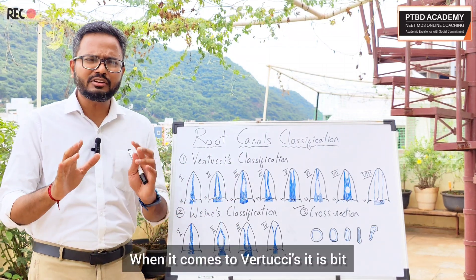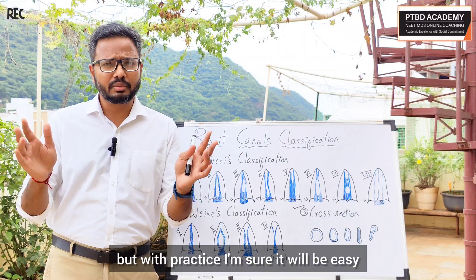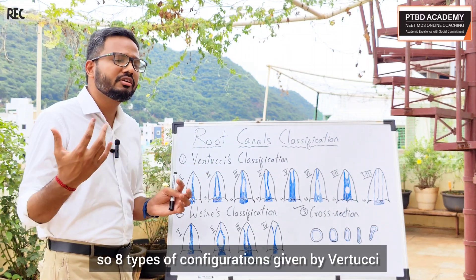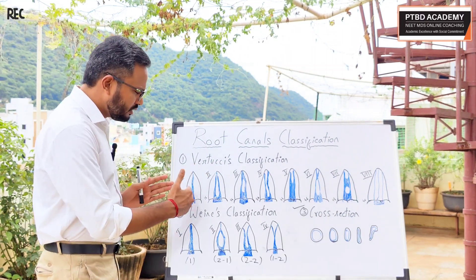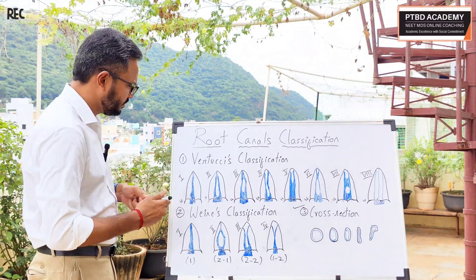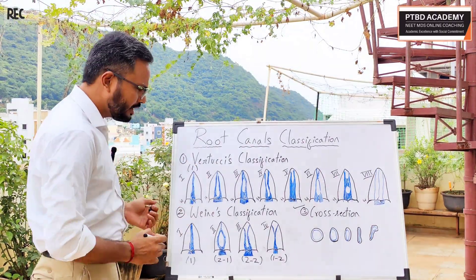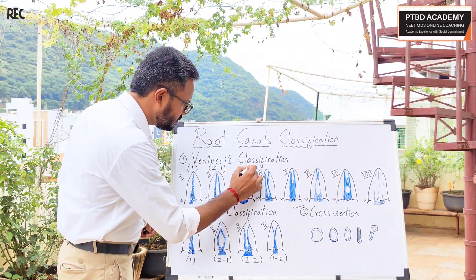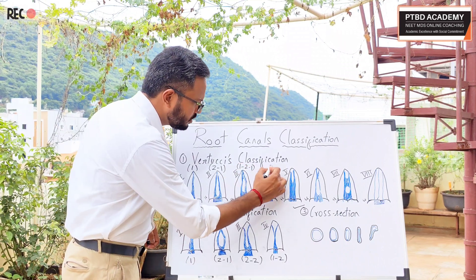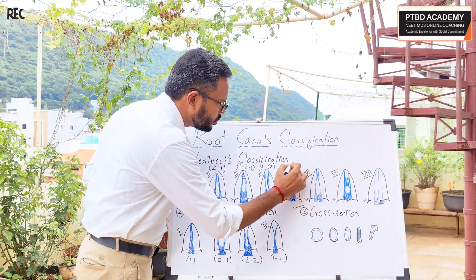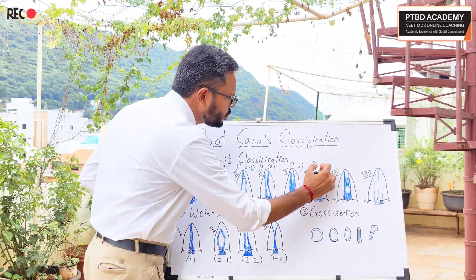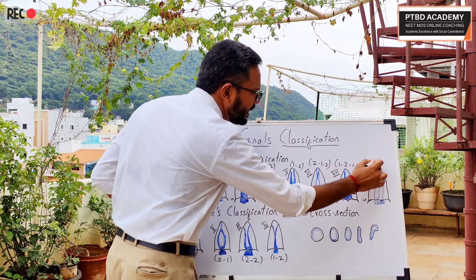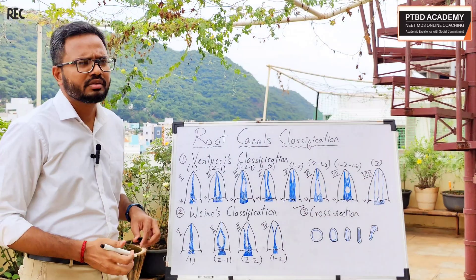When it comes to Vertucci's classification, it is a bit more complex to remember but with practice it becomes easy. Vertucci gives us 8 types of configurations. Type 1: single canal (1). Type 2: 2-1. Type 3: 1-2-1. Type 4: 2. Type 5: 1-2. Type 6: 2-1-2. Type 7: 1-2-1-2. Type 8: 3 separate canals.